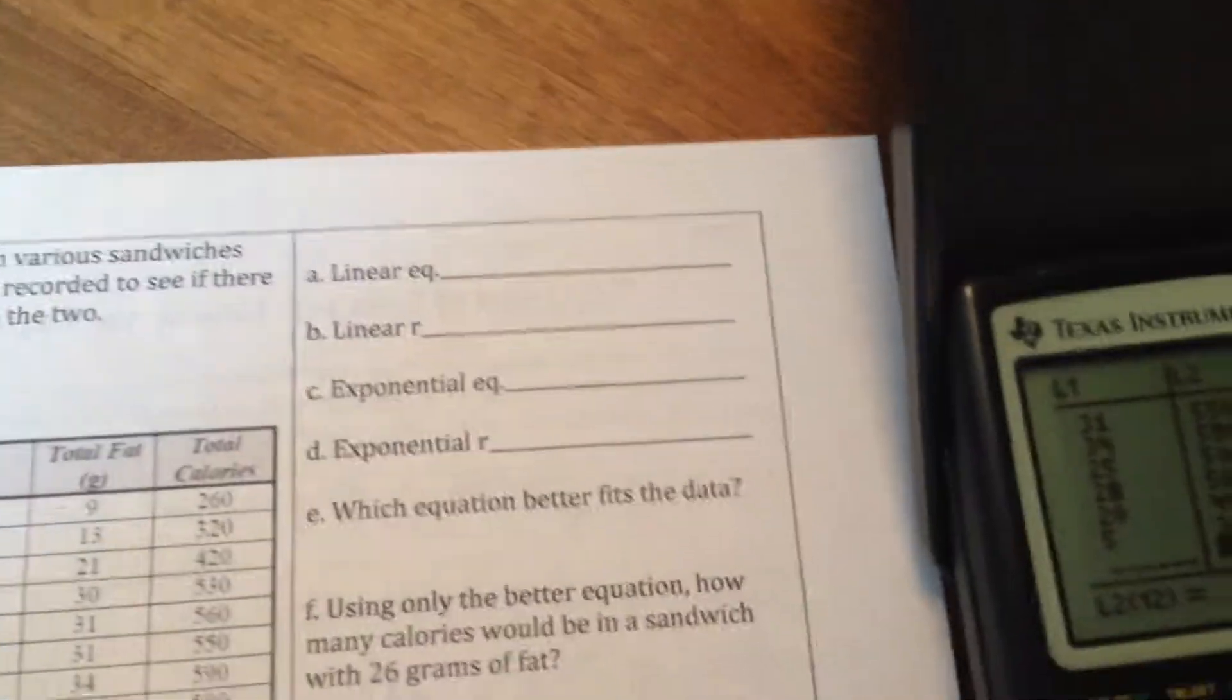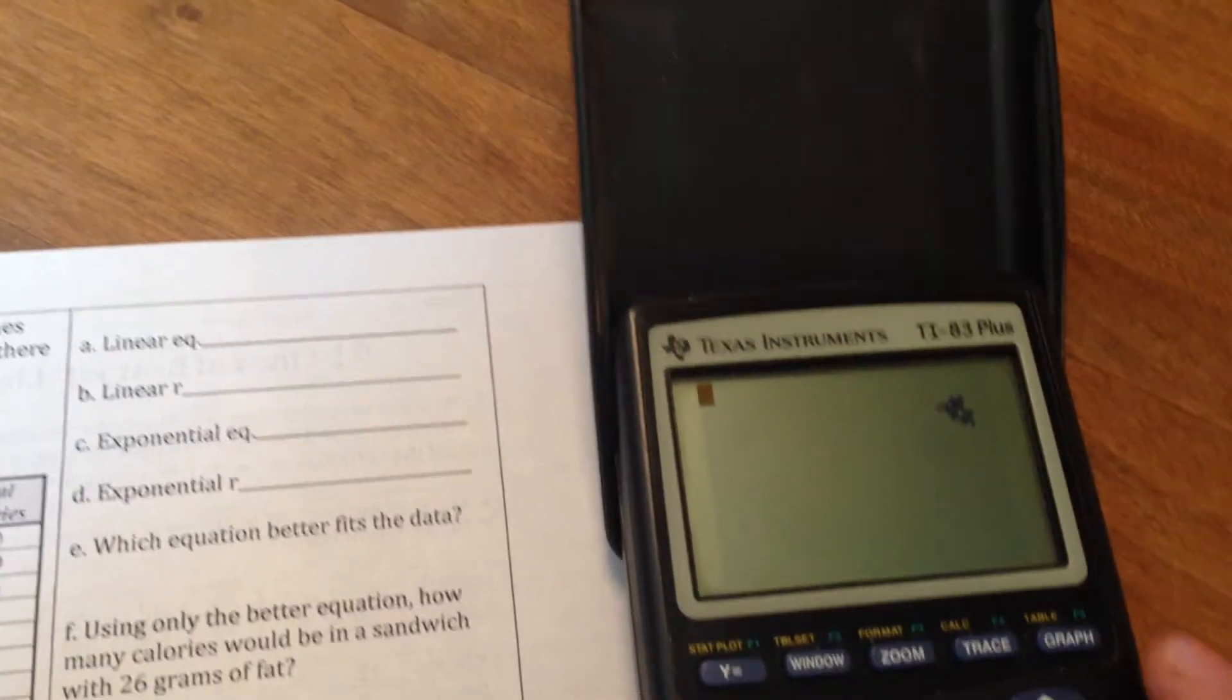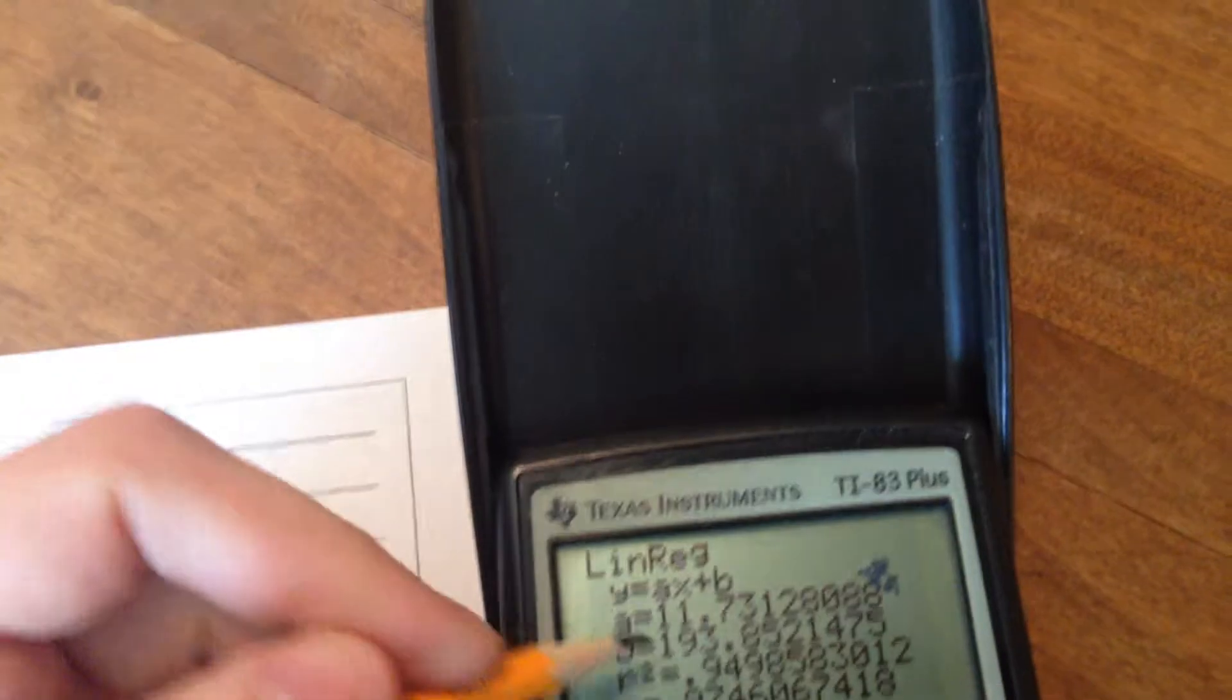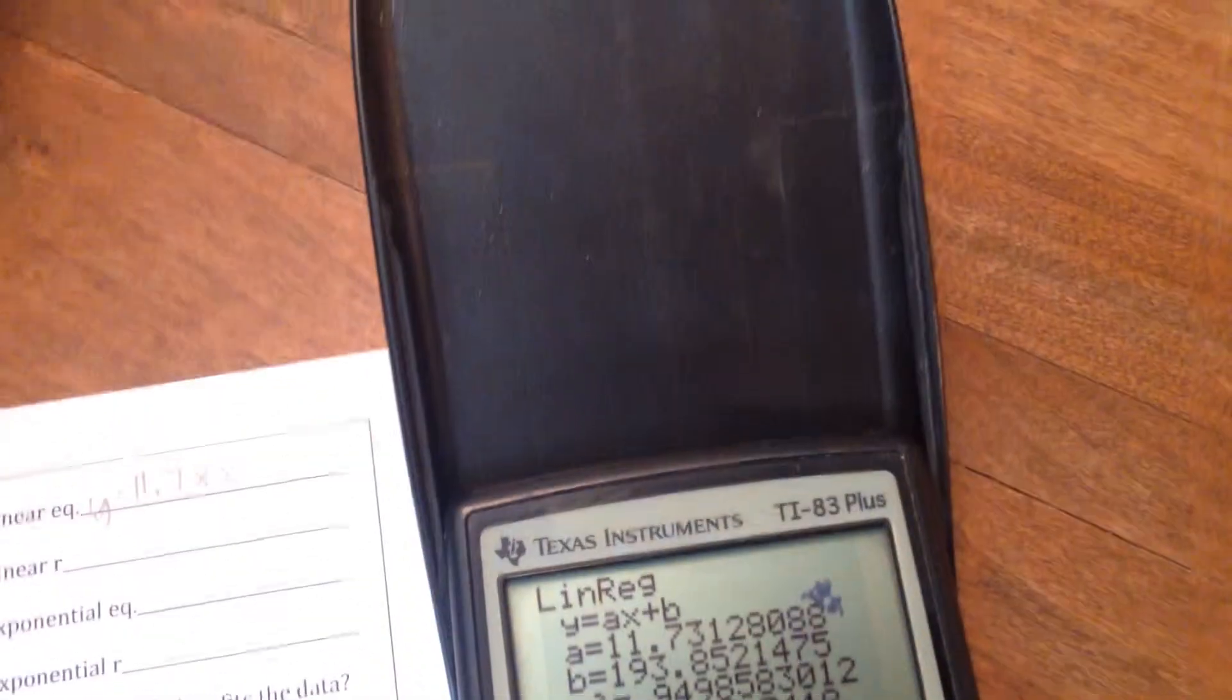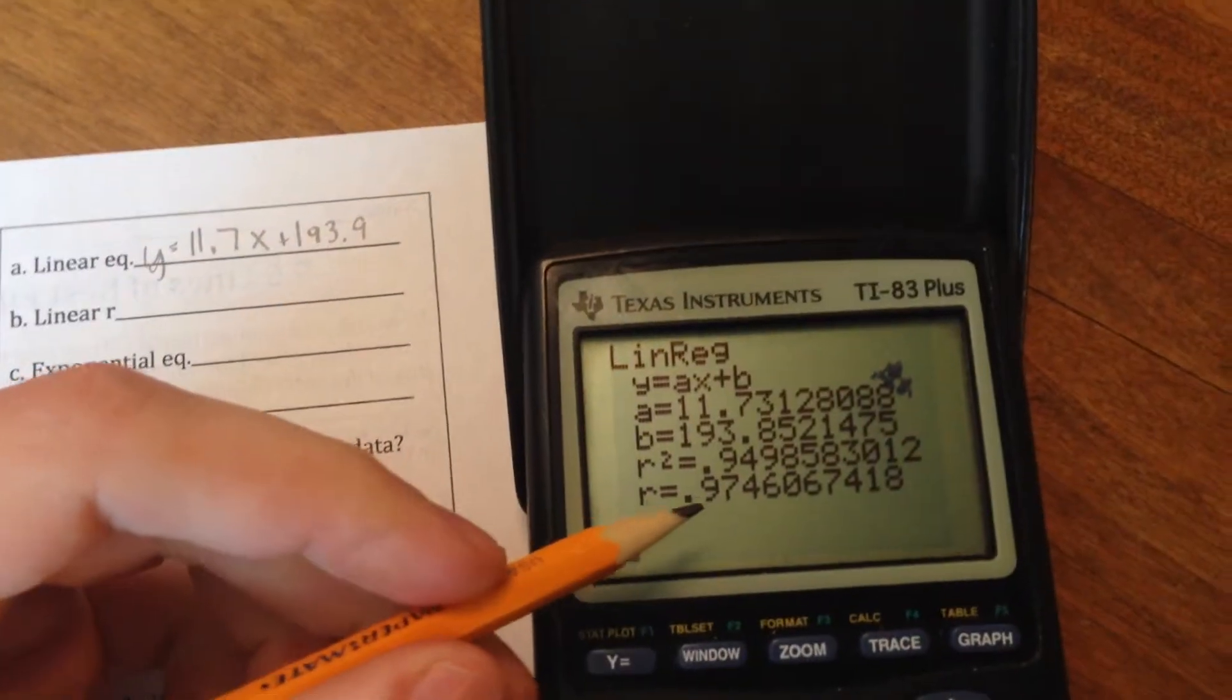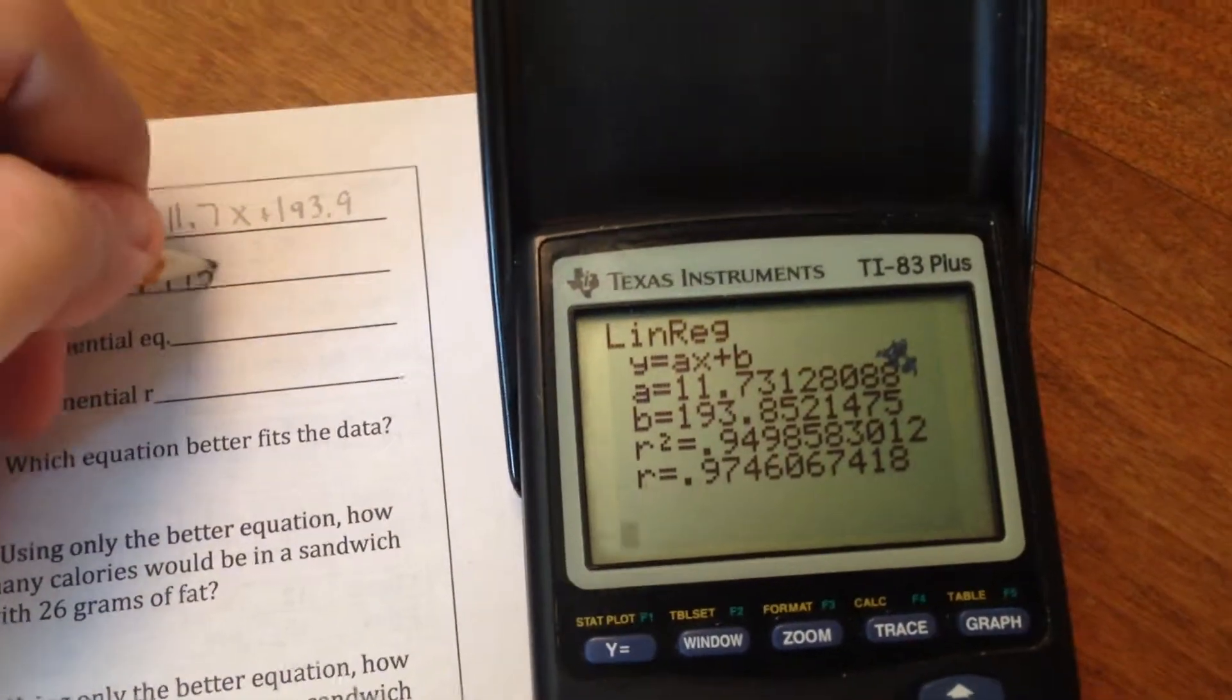Same idea happening here. We need to find the linear equation and the linear regression. So let's go back to our home screen. I'm just going to push clear to clear that up. And we'll push stat over to calculate, option 4, and then enter. Here we go. There's our equation. Y equals, I'm going to replace the A with this number, 11.7X, and then we have plus 193.9, plus 193.9. Our regression number is 0.975. We're going to round three decimal places again.